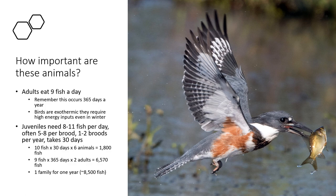So how important are these guys to stream ecology? I was thinking about it for birds and did some simple calculations. For this kingfisher, which are common in our region, adults eat around nine fish a day — a middling-sized fish; you can see a carp being taken away there. Birds have to do this 365 days a year. They don't get any days off. They're small and warm, so they have to spend a lot of energy maintaining their body and require high amounts of energy even in winter — probably more in winter because of the colder environment. If juveniles need around eight to eleven fish per day, and there are between five and eight in every brood, and a kingfisher might make two broods a year taking about 30 days to raise each, you can start to estimate how many fish these animals actually need.